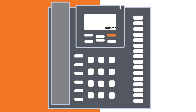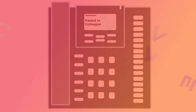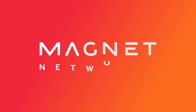If you follow all these steps, your display screens will show that the call is being transferred. It can be easier to add a specific Transfer function key to your soft phone. But for now, that's how to make, receive and transfer a call using Magnet Talk.